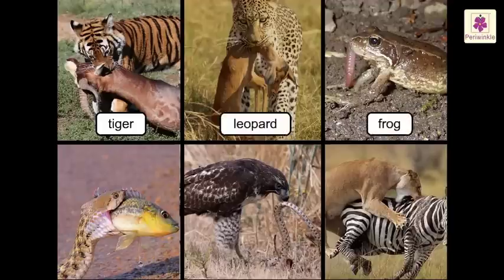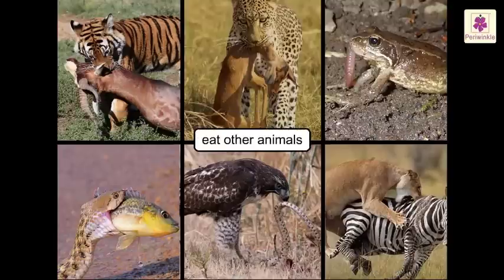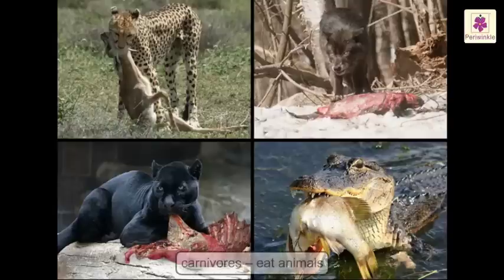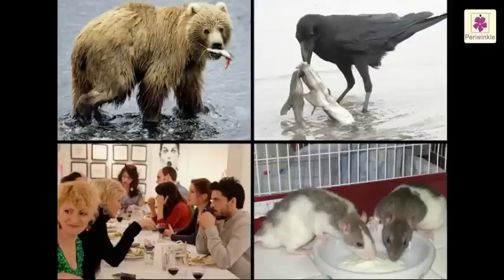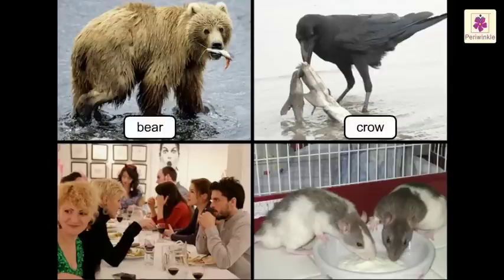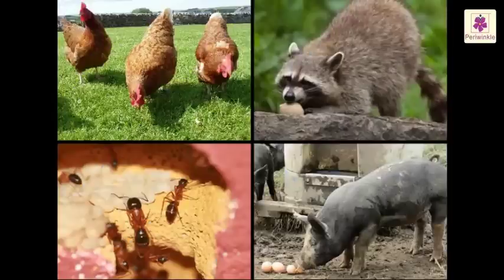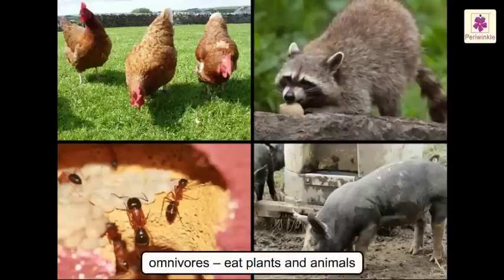Animals like tigers and snakes eat other animals. Such animals are called carnivores. Some animals like bears, crows, rats and humans eat both plants and animals. Such animals are called omnivores.